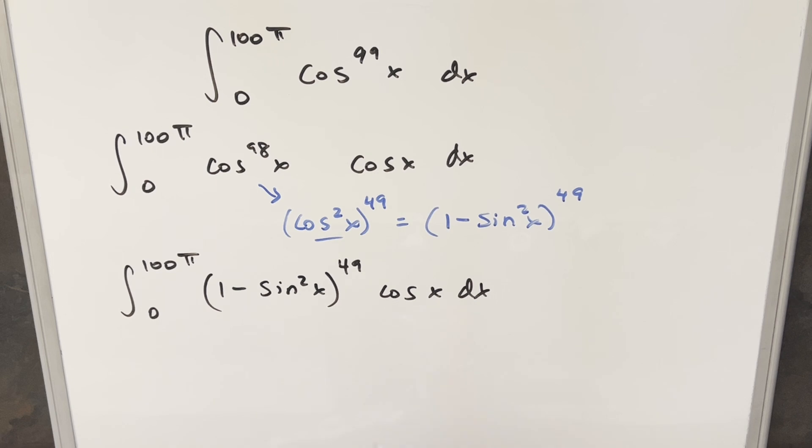But then now we have this set up for a u substitution. I can make my u equal to sine of x, and then du is just going to be cosine x dx.